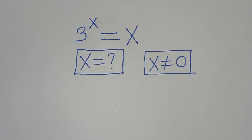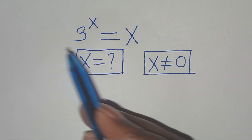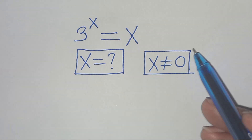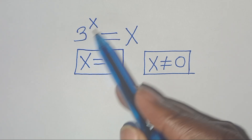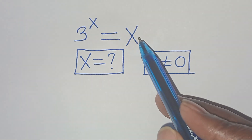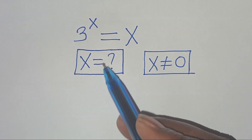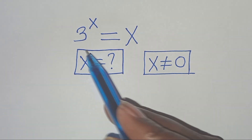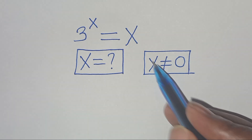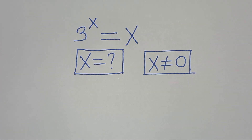Hello everyone, you are welcome to solve this nice algebra problem, which is 3 to the power of x equals x. So what is the value of x, given that x is not equal to 0?